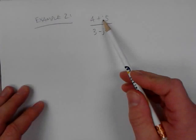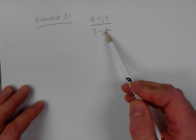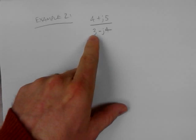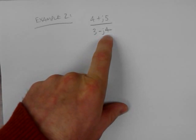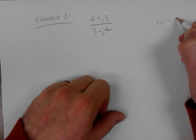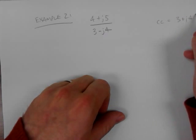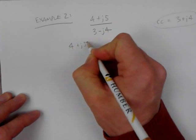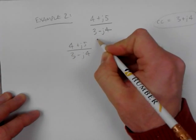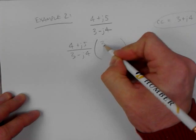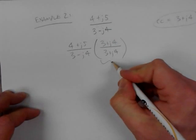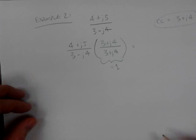Here's example two: a complex number divided by a complex number. We determine the complex conjugate of the denominator. The denominator is 3 minus j4, so the complex conjugate is 3 plus j4. Step two: take this number and multiply it by 3 plus j4 over 3 plus j4, which equals one.